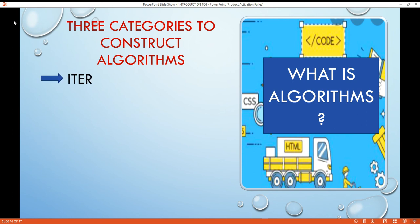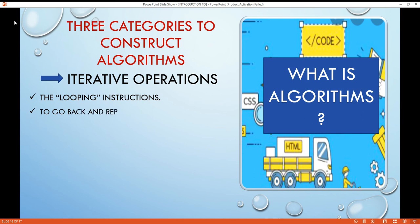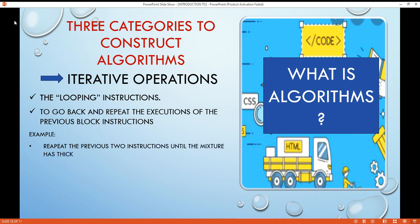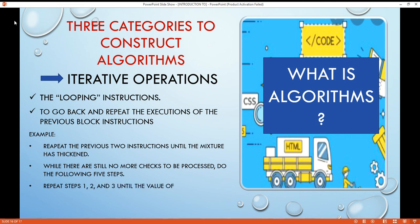Now the third one, the iterative operations. These are the looping instructions of an algorithm. They tell us not to go on to the next instruction but instead to go back and repeat the execution of the previous block of instructions. Examples: Repeat the previous two operations until the mixture has thickened. While there are still more checks to be processed, do the following five steps. Repeat steps 1, 2, and 3 until the value of Y is equal to positive 1.